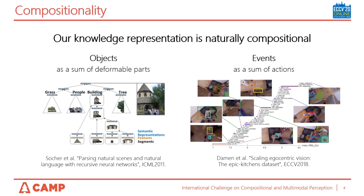Let me talk more about Compositionality. People understand the world as the sum of its parts. Objects can be broken down into pieces, events are composed of other actions, and sentences are composed of a series of words. When presented with new concepts, people can decompose novelty into familiar parts. So our knowledge representation is naturally compositional. But unfortunately, many architectures in computer vision tasks generate representations that are not compositional.